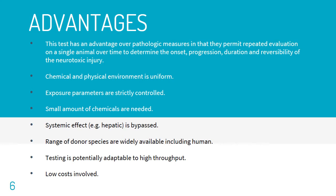Furthermore, the systemic effect is bypassed, thus the effect will only present locally. The range of donor species is widely available — it can be humans or even animals. Plus, the testing is potentially adaptable to high throughput, and lastly, low cost is involved in carrying out the test.